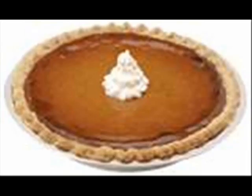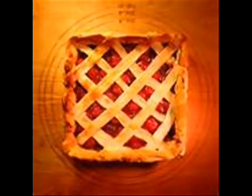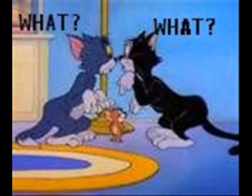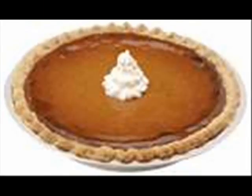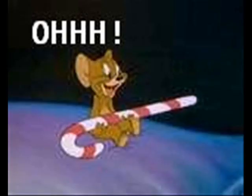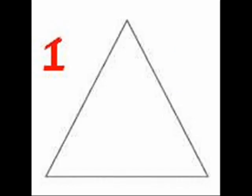Circles around us like a pi. Pi r squared is the area. Pi r squared is the area. Pi r squared is the area.